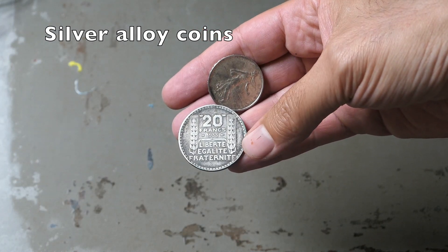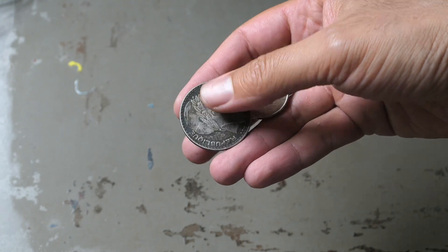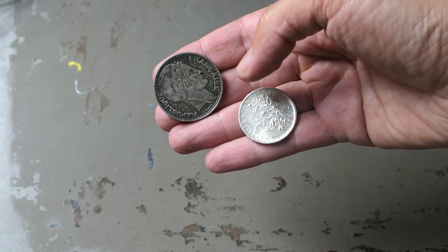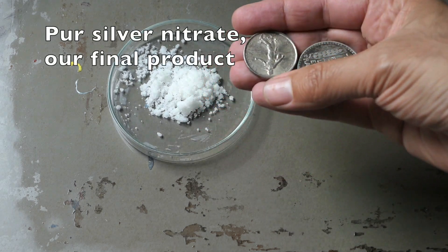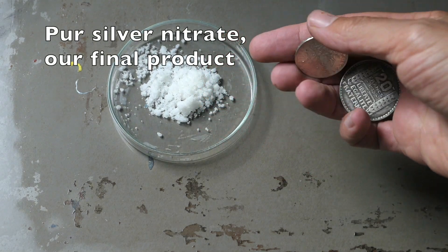We're going to use an antique coin as our silver source, but silver cutlery is also suitable. In any case, we're dealing with an alloy that will contain other metals, copper and nickel in general, and we'll need to eliminate them.